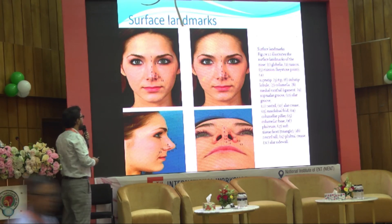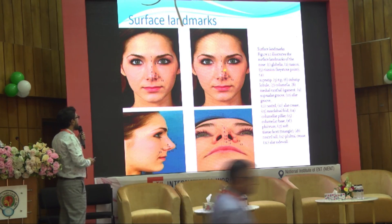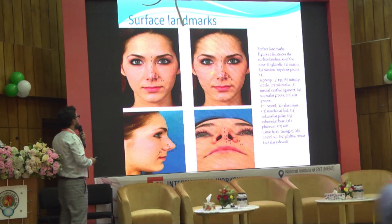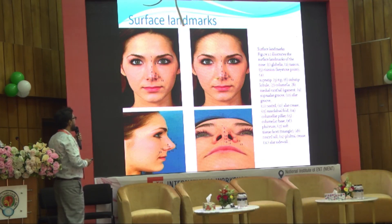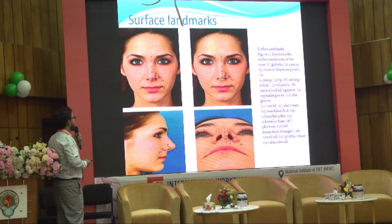The rhinion is the junction between the nasal bone and upper lateral cartilage, and it is the keystone point — a very important point for the dorsal aesthetics. Number four is the supertip area, then the tip area, the infratip lobule, and the columella.